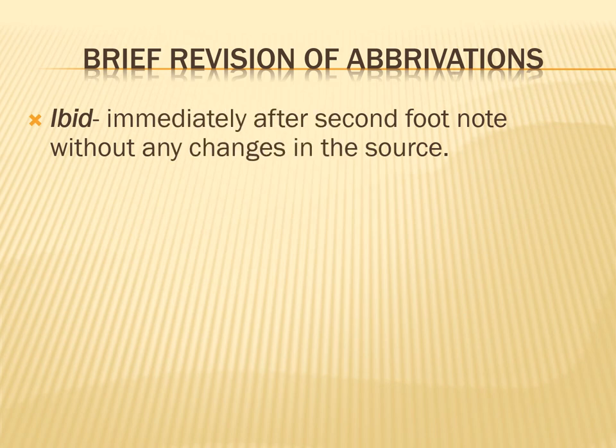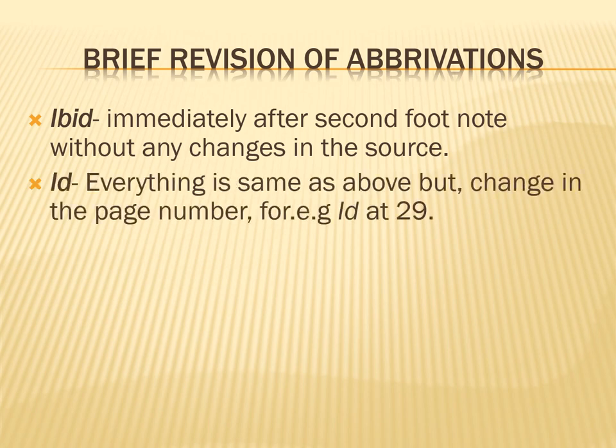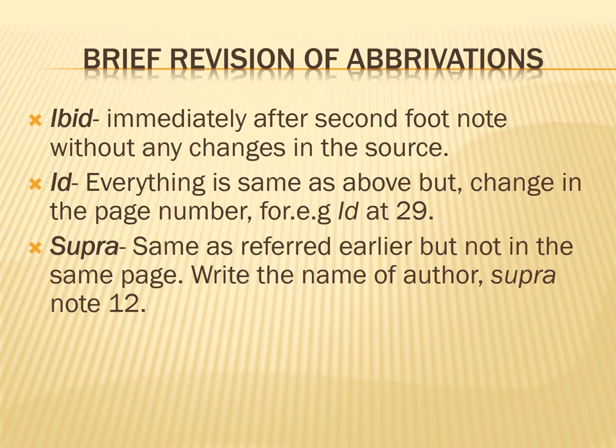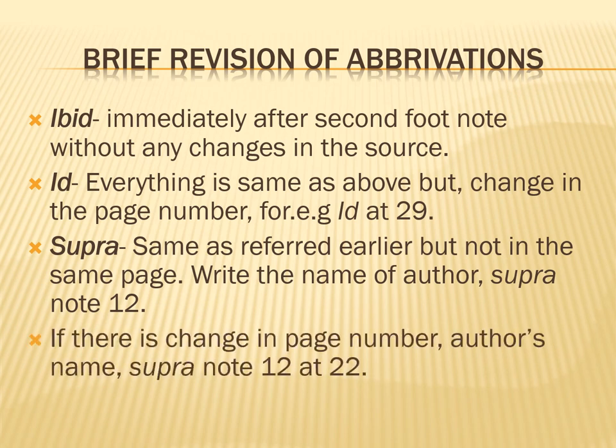Let's have a quick revision of the abbreviations. The first is 'ibid,' which means immediately the same as the second footnote without any changes in the sources. The second is 'id.': everything is the same as above but with a change in the page number — for example, 'id. at 29.' The third is 'supra,' meaning the same as referred to earlier but not on the same page — write the author's name then 'supra note 12,' or if there is a change in page number, 'author's name, supra note 12 at 22.' Remember to write ibid, id., and supra in italics, as they are Latin words.